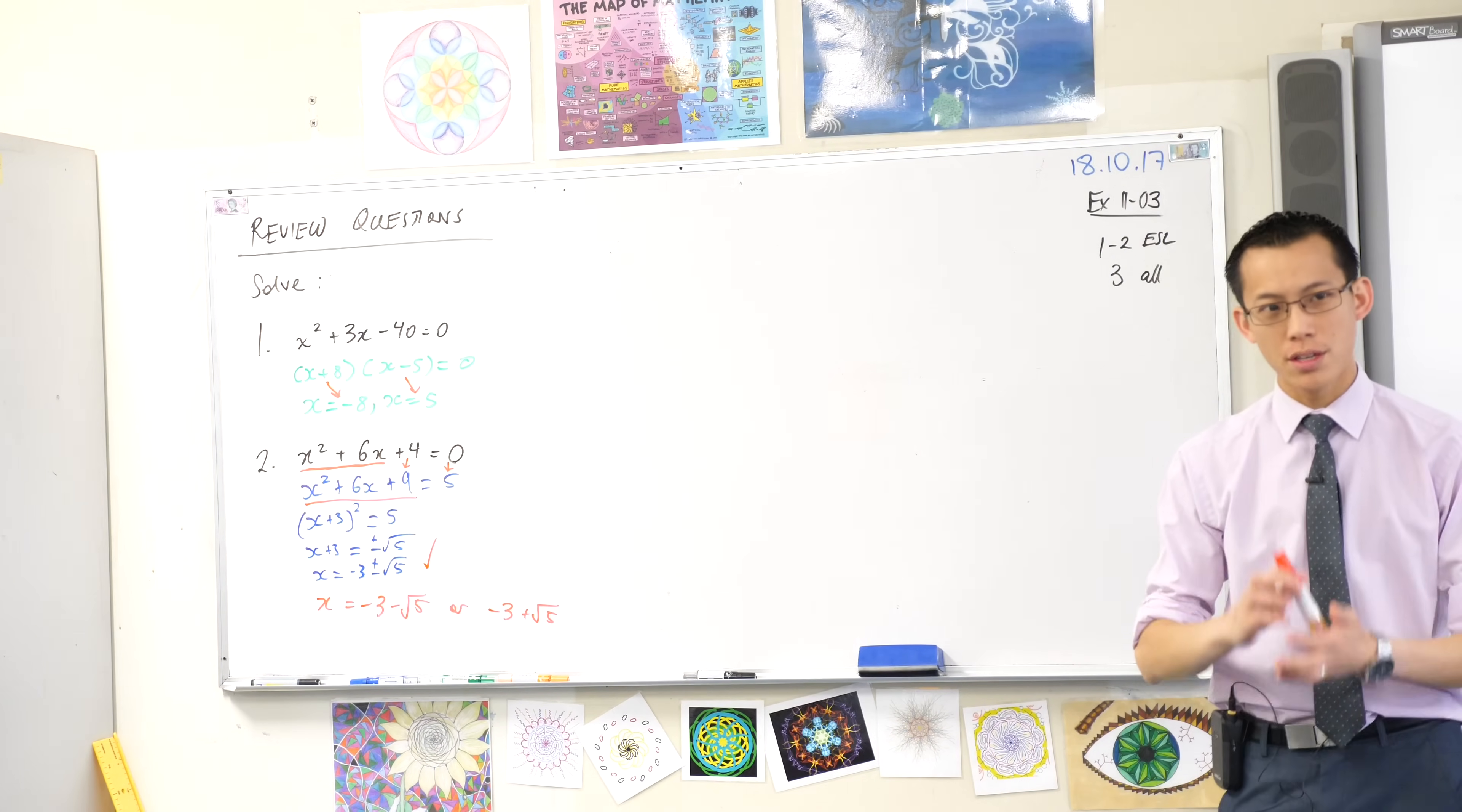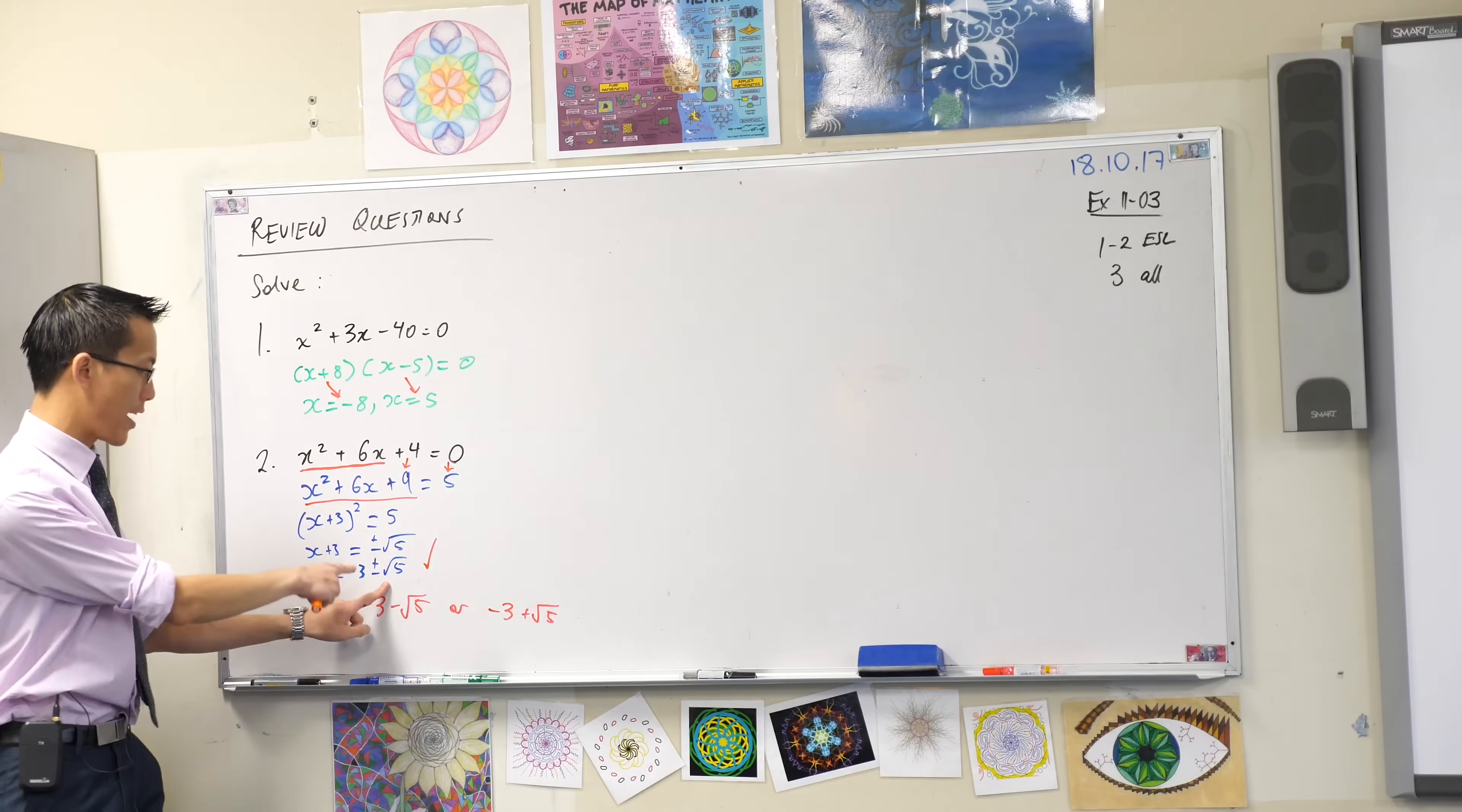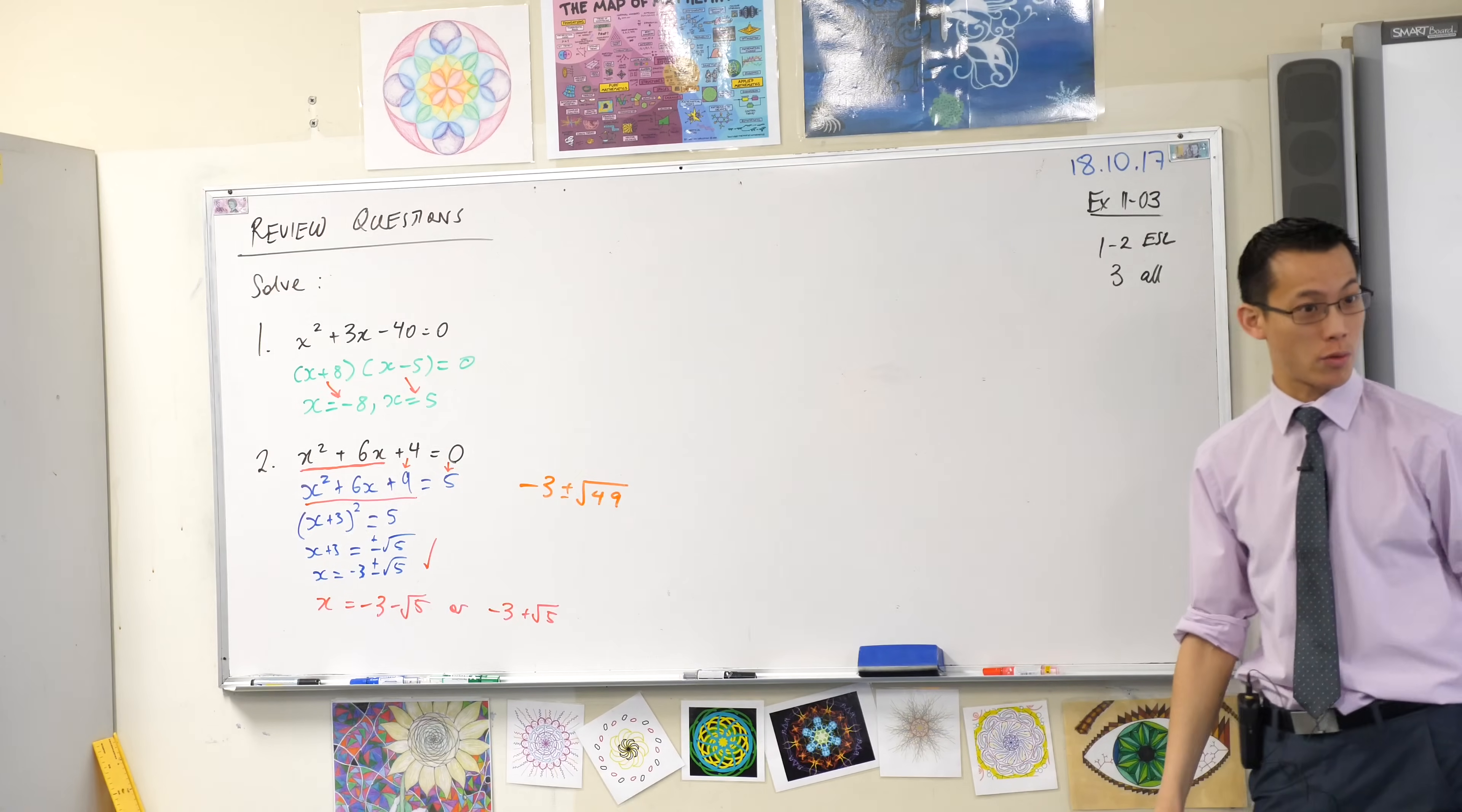However, sometimes we do want to write it as two and I will show you an example. Just put your pens down for a minute and look up. Suppose we went through this process, and on this last line here, instead of getting minus 3 plus or minus the square root of 5, suppose my last line said this. Suppose the numbers ended up with a 49 underneath the square root.